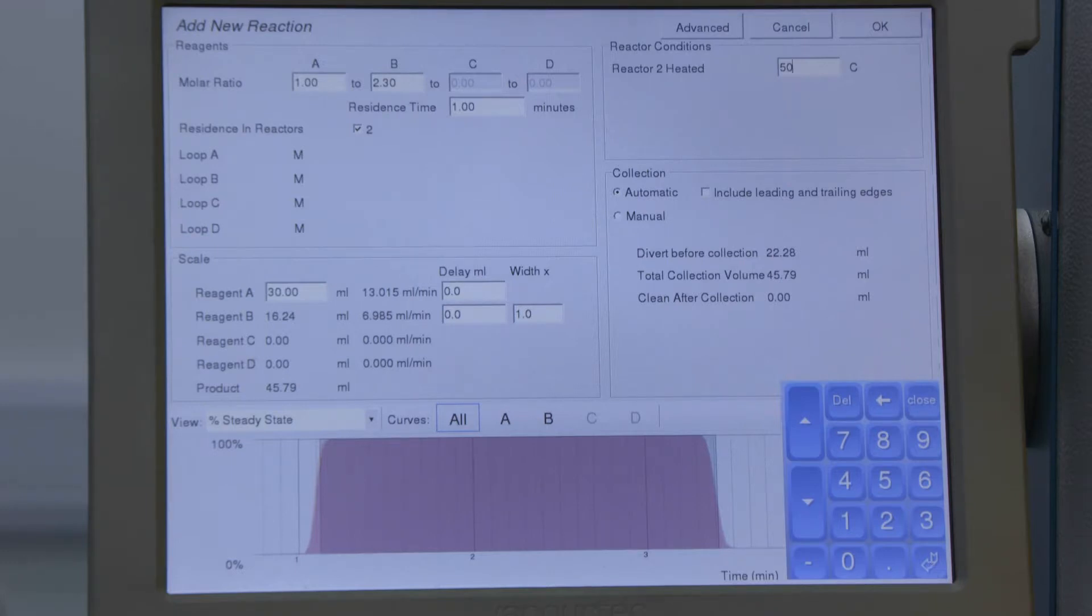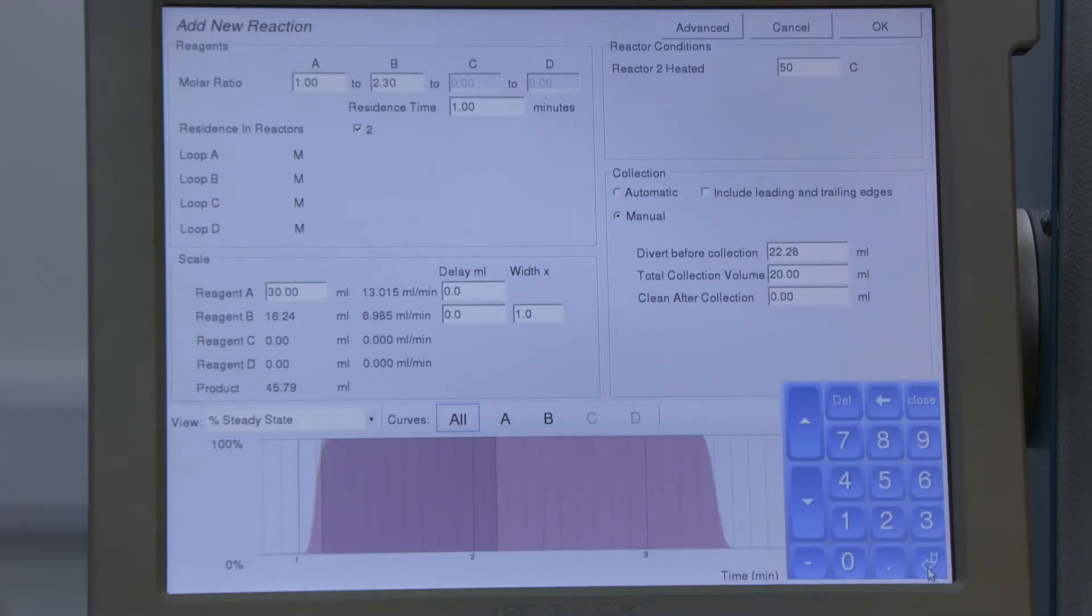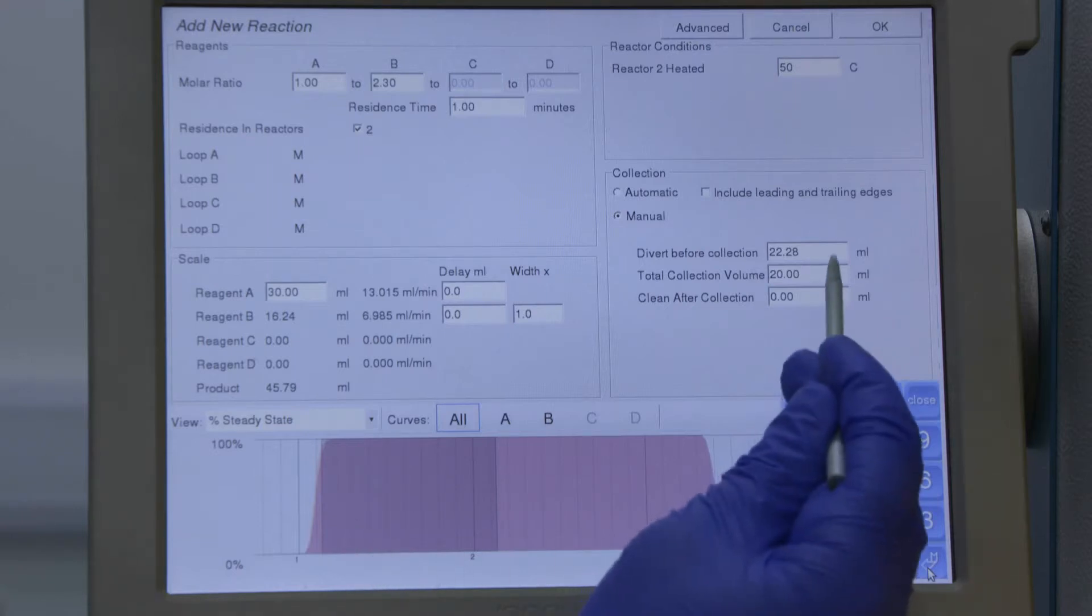I can also let FlowCommander control how to collect my product. For this experiment I want to enter a specific volume. So I'm going to use the manual tool and tell it to just collect 20 milliliters. I can also use this shaded region as a guide of where in my steady state it's going to be collecting. I'm going to move it.